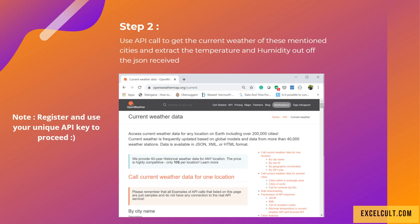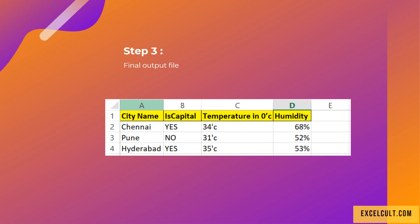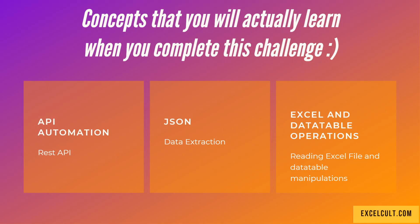As step three, write that data back to the Excel sheet into their particular column names. The temperature value should go under the temperature column and the humidity value should go under the humidity column. This is what you'll be able to learn if you complete this challenge.